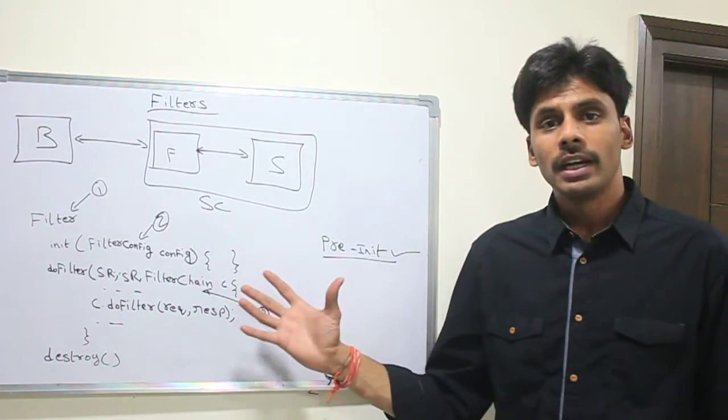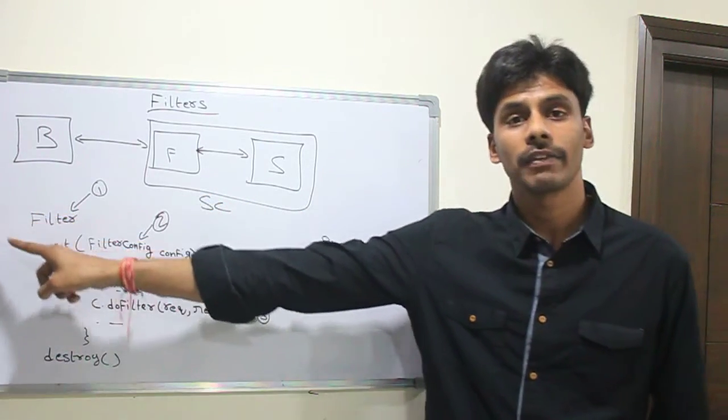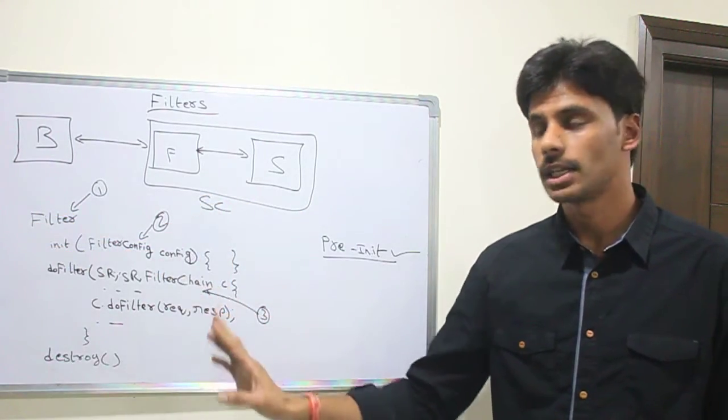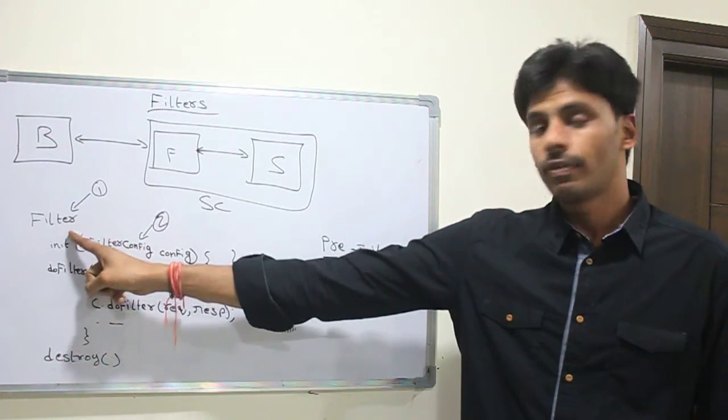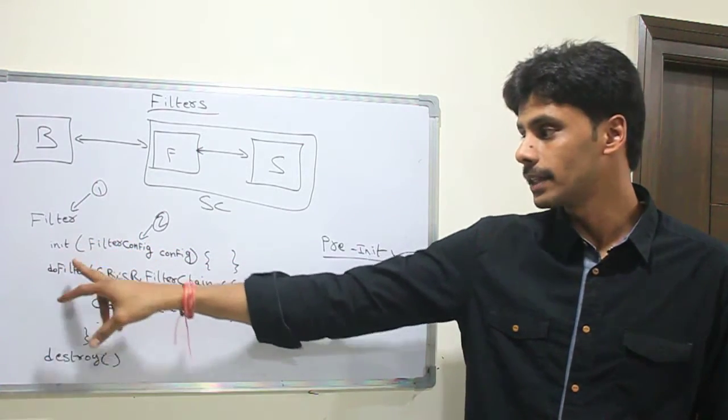To create a filter, again, you will create a Java class that implements the filter interface in the javax.servlet.http package. Within that filter, you have three methods. The filter interface has three main methods.